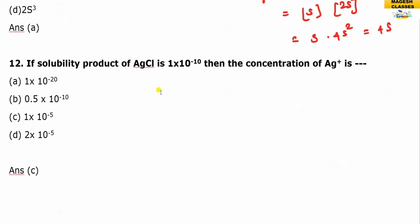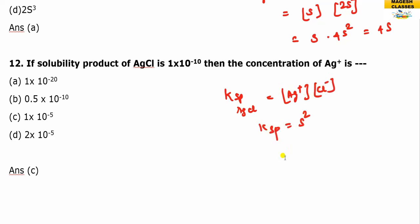If the solubility product of HCl is 1 × 10⁻¹⁰, then the solubility S² = Ksp, so S = √Ksp = √(1 × 10⁻¹⁰) = 1 × 10⁻⁵. The answer is C.